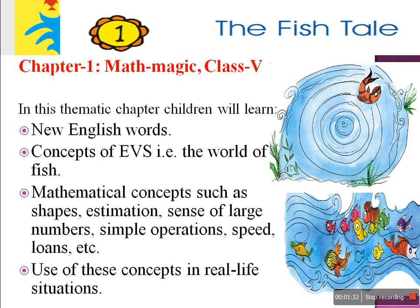Then the concept of speed. In this chapter we will learn: if a boat has 40 km per hour speed, how much will it travel in 2 hours, 1 hour, 4 hours? And loans — the fishermen are doing some business with fish. For setting up a business, some loan is required. They take money from banks at some interest rate and return it in small amounts. After learning these concepts, we will also learn how to use them in real life situations.